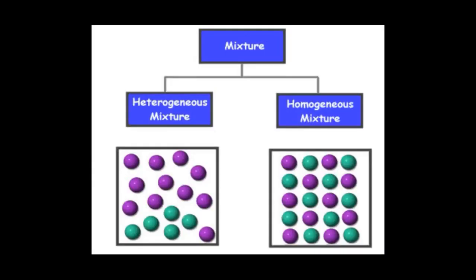In chemical terms, in a heterogeneous mixture the molecules are not uniformly distributed. While in a homogeneous mixture, the molecules are uniformly distributed throughout.